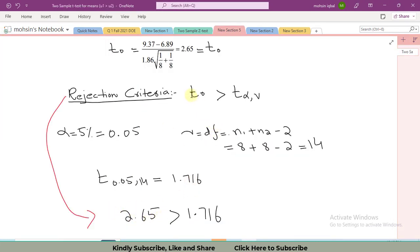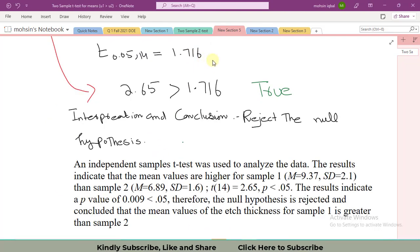So as per the criteria, 2.65 t0 value is greater than 1.71 rejection criteria. Now we will discuss interpretation and conclusion. Reject the null hypothesis as the rejection criteria has been satisfied.